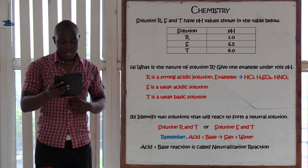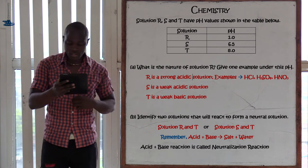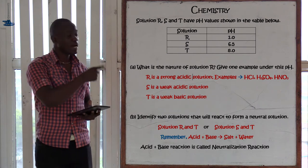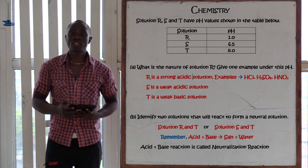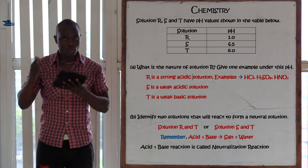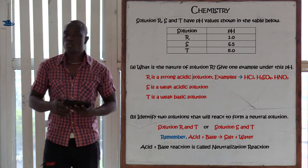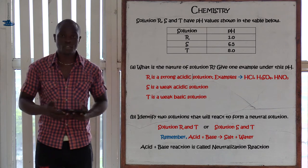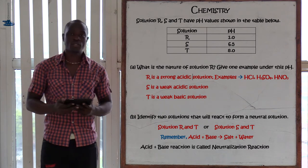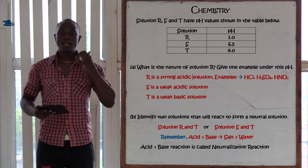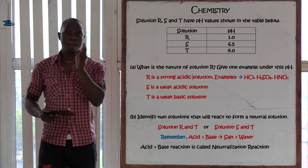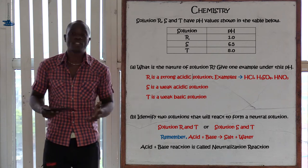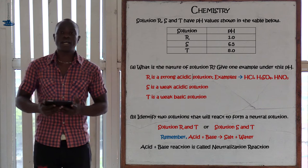The next question asks to identify two solutions that will react to form a neutral solution. A neutralization reaction is a reaction whereby an acid reacts with a base. On the pH scale, 7 is in the middle between acid and base, so when they react the pH tends to come to that neutral region.